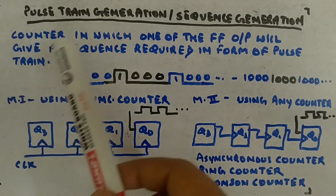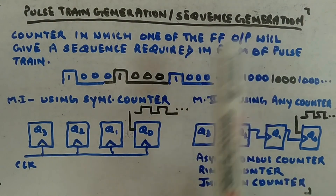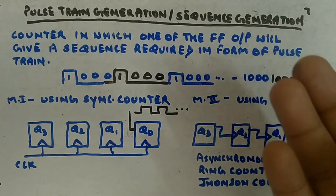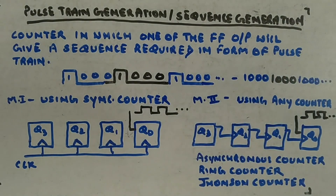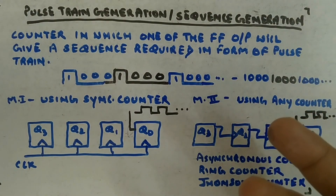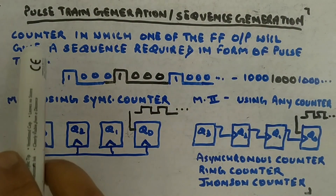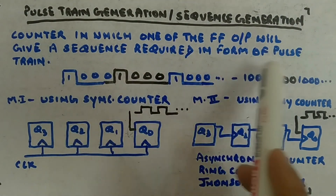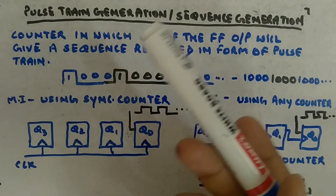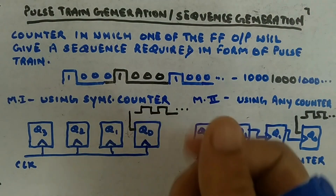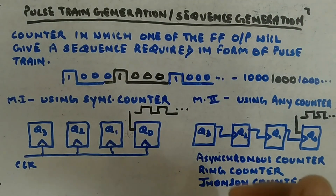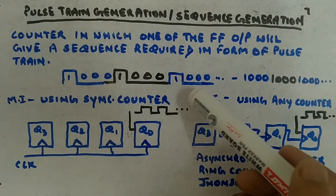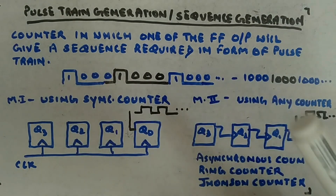Let's start with a new topic called pulse train generation, also called sequence generation. You will be given some sequence in the form of pulses — it's a repeating sequence — and you have to design a counter where one of the outputs gives the required sequence. For example, the sequence is one zero zero zero, one zero zero zero, one zero zero zero, and so on.